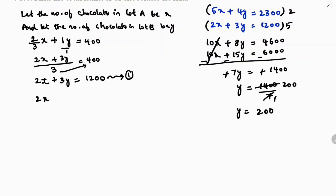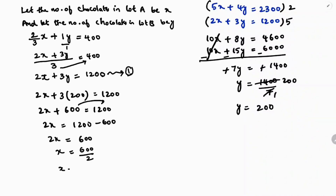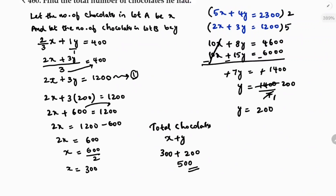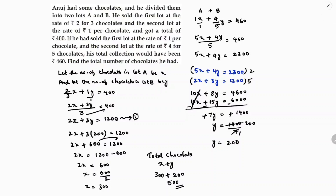So y = 200. Substituting the value of y into the first equation: 2x + 3 × 200 = 1200, so 2x + 600 = 1200, giving 2x = 600, so x = 300. Therefore, the total number of chocolates Anuj had is x + y = 300 + 200 = 500 chocolates.